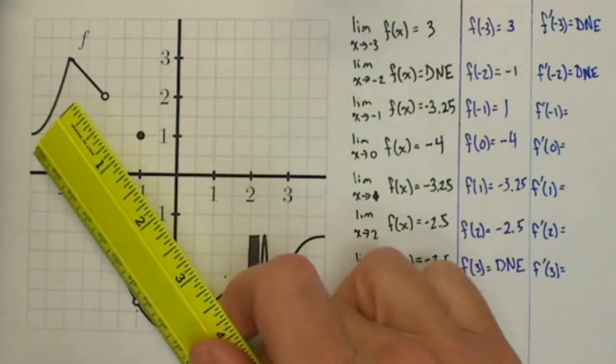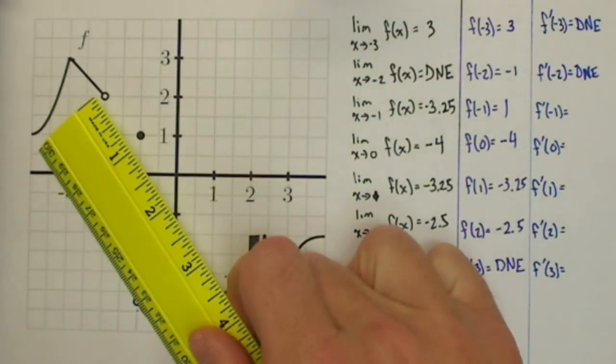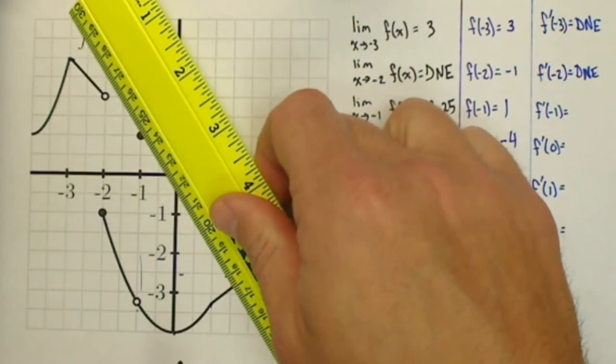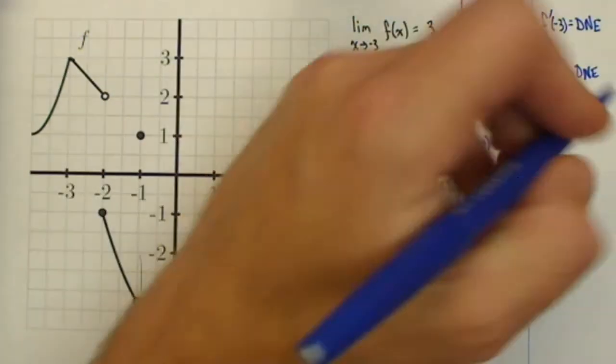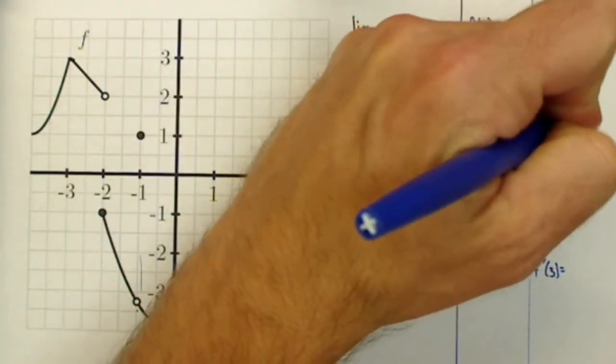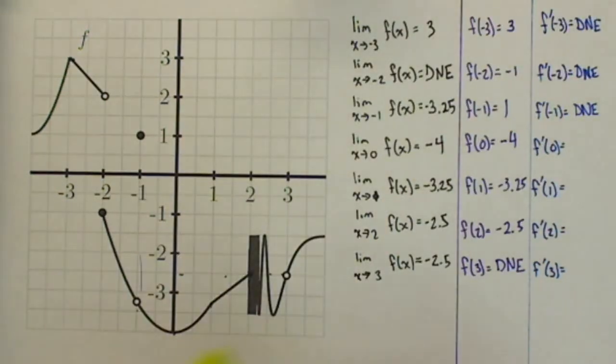At negative 1, first off, it looks like the tangent line is here, but the point's up here. So again, two possible tangent lines. You can't have that. It's going to be a place where the derivative does not exist.